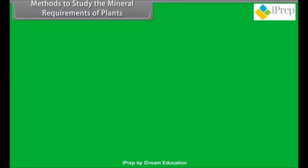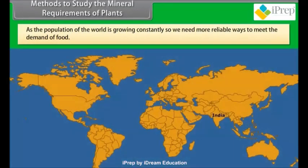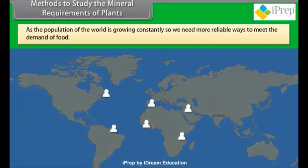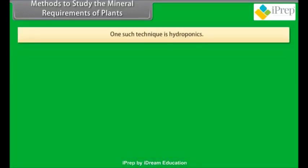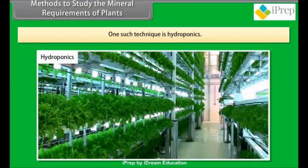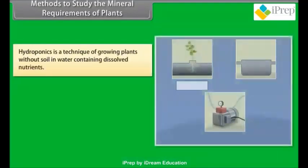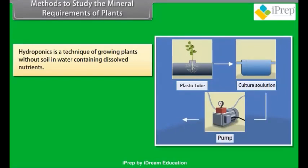Methods to study the mineral requirements of plants: as the population of the world is growing constantly, we need more reliable ways to meet the demand of food. One such technique is hydroponics. Hydroponics is a technique of growing plants without soil, in water containing dissolved nutrients.